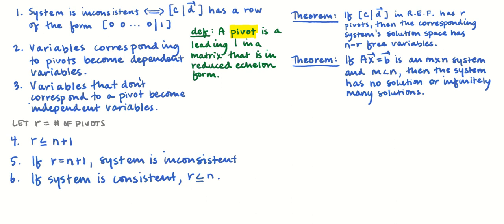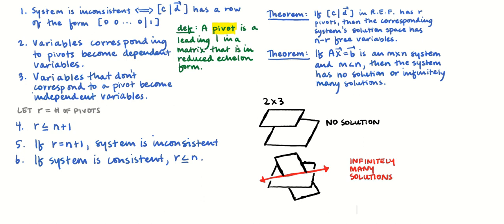The next theorem is that if we have a system with fewer equations than variables — an m by n system with m less than n — then the system has either no solution or infinitely many solutions. We can visualize this going back to R3 and R2: with a two by three system like we discussed at the beginning, the two planes are either parallel — no solution — or they intersect in a line — infinitely many solutions. A wide matrix doesn't have enough equations to pin down a unique solution.